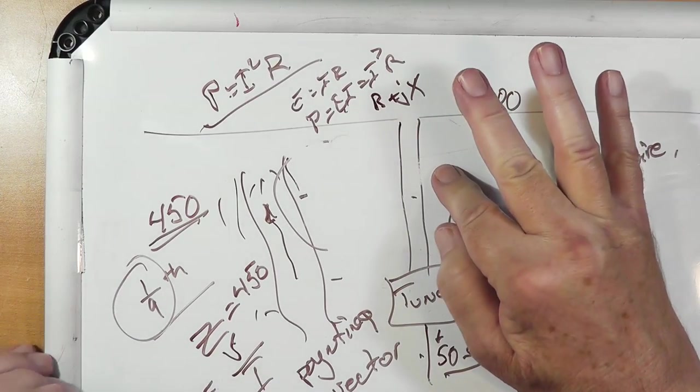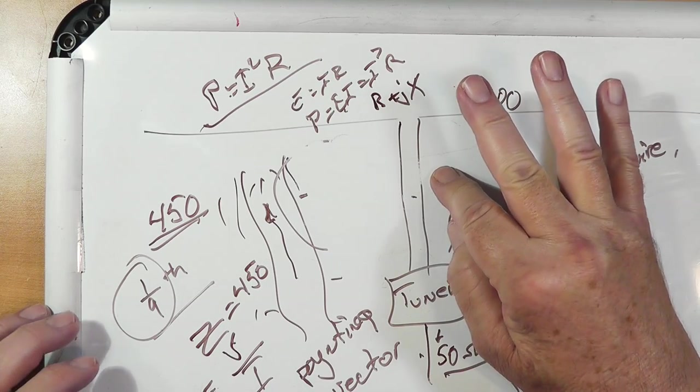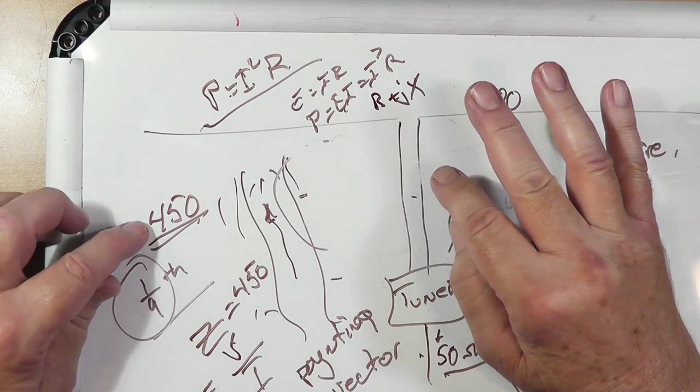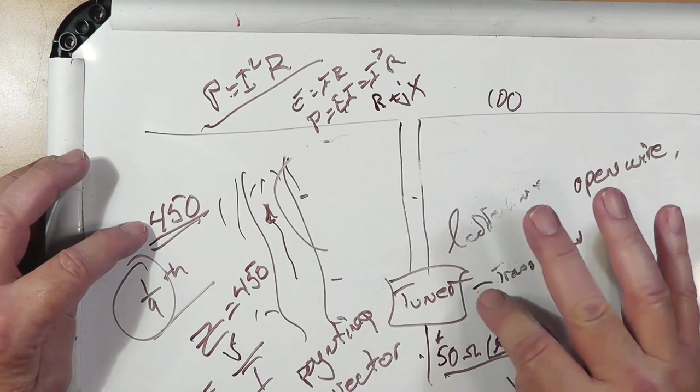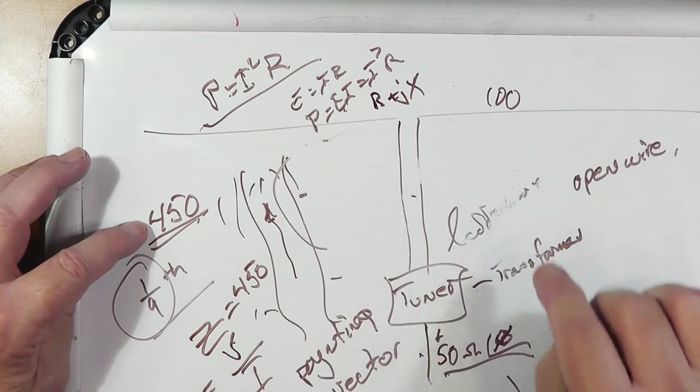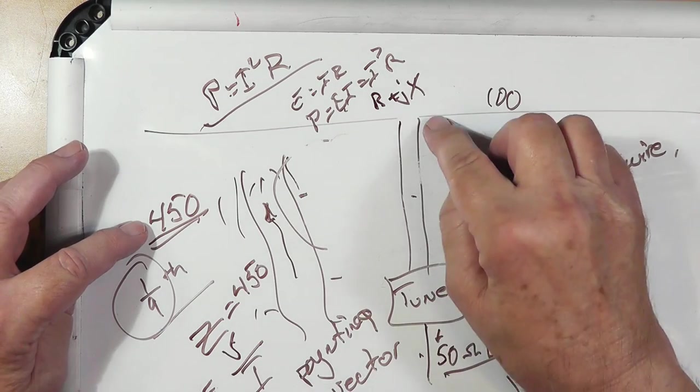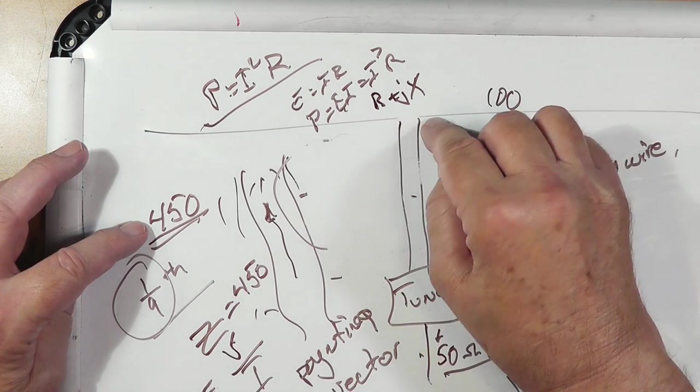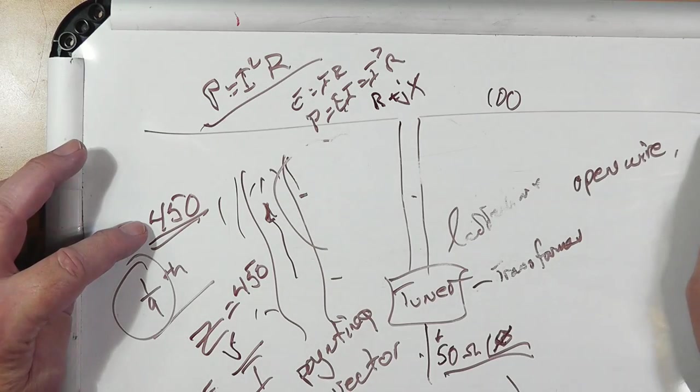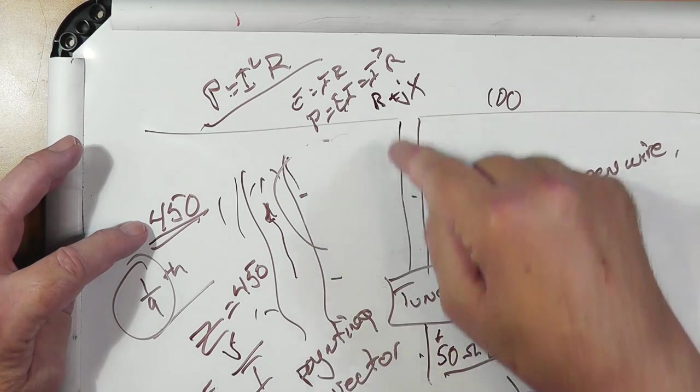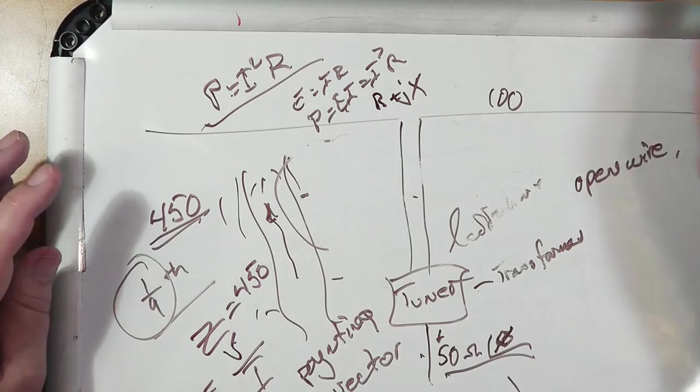There's significantly less power lost in a 450 ohm window line to here. So that means that you can put the tuner down here because you're not going to lose that much power in this line. Then you can have a non resonant antenna down here knowing that there's going to be a lot of give and take there.